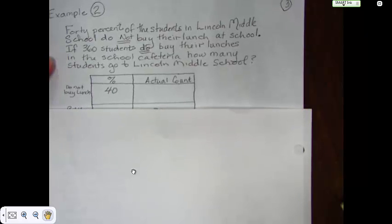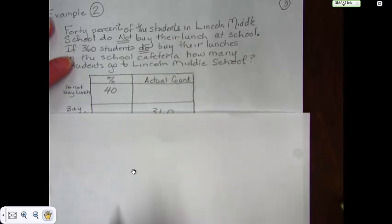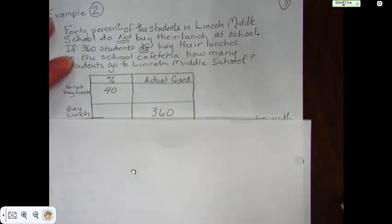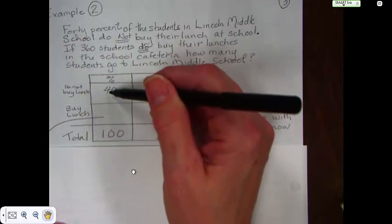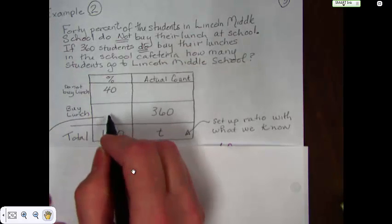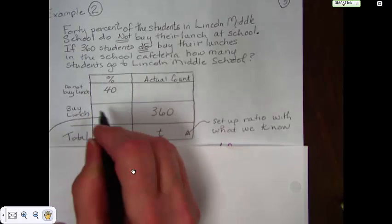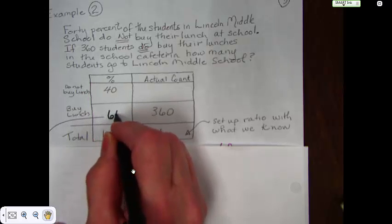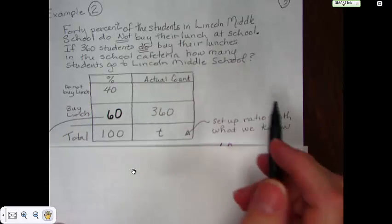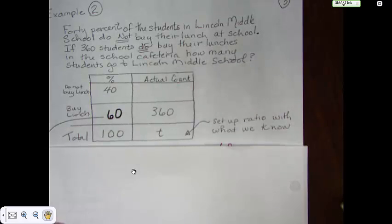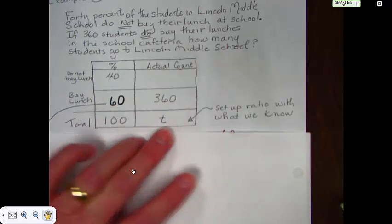So again, we go ahead and we have our ratio box with our percent and actual count. We know that 40% do not buy lunch. We don't know how many buy lunch, but we can do the 100 minus 40 and get 60% here. So we now know that 60% buy lunch.